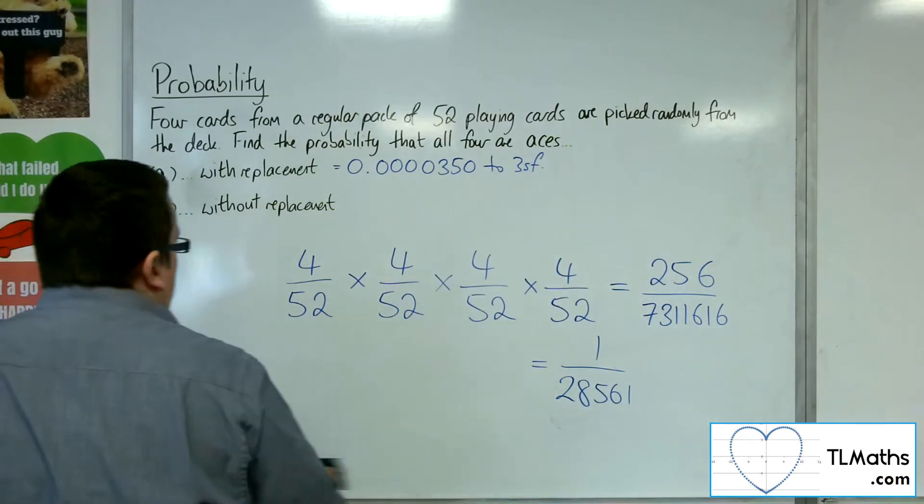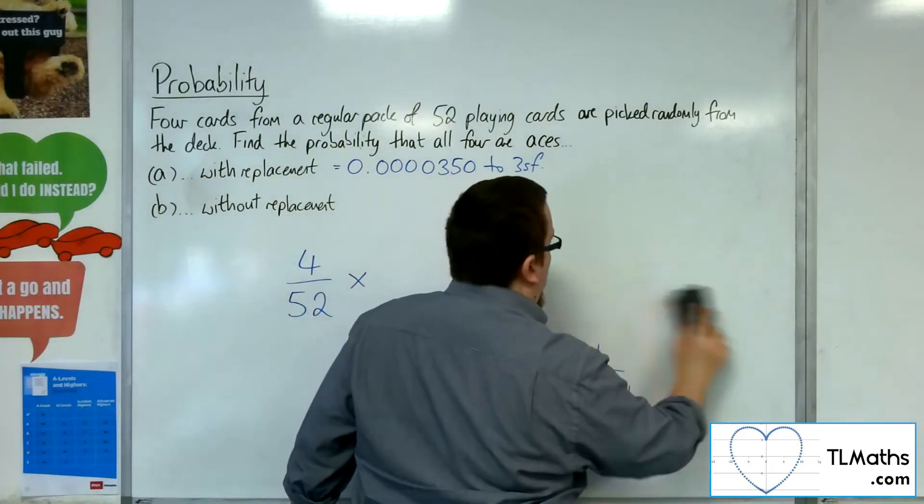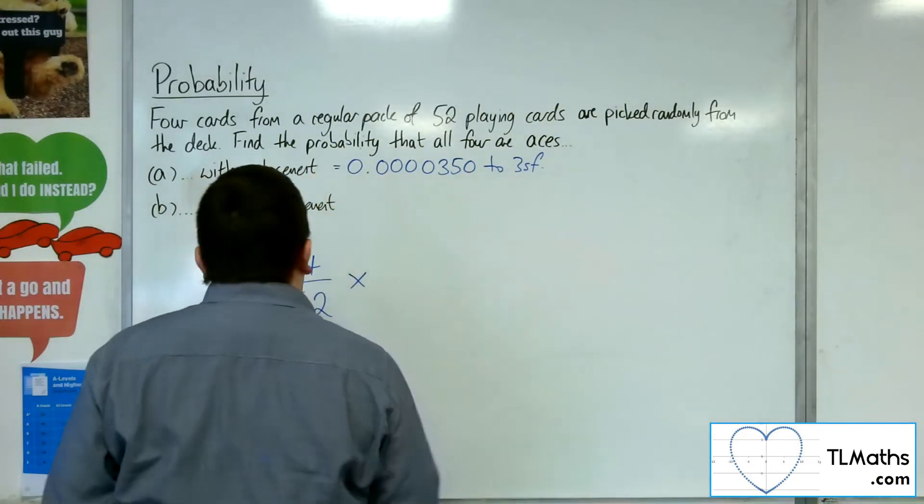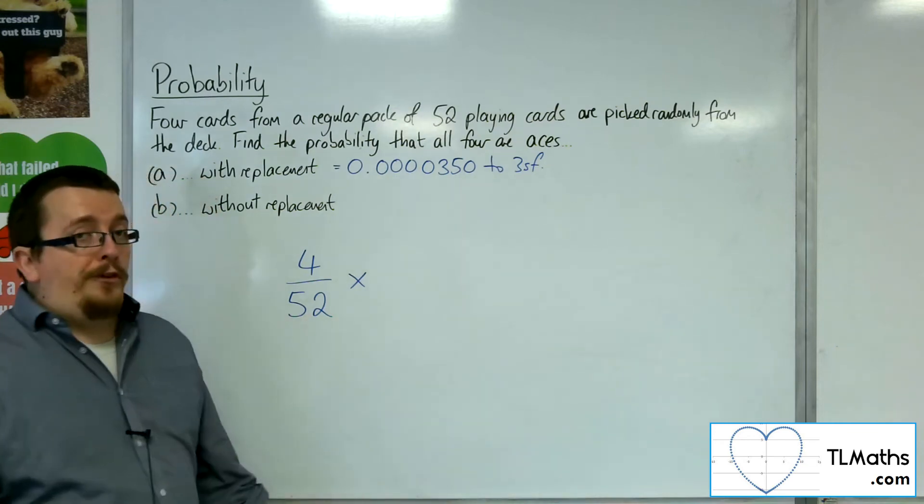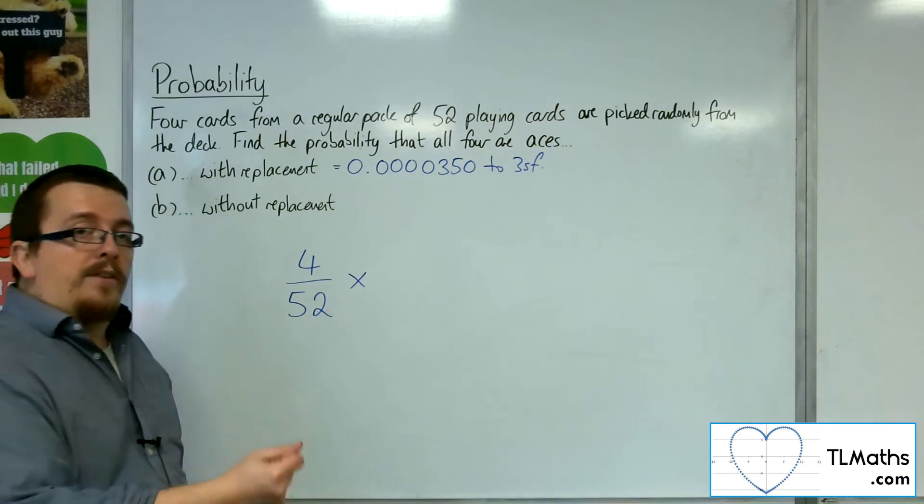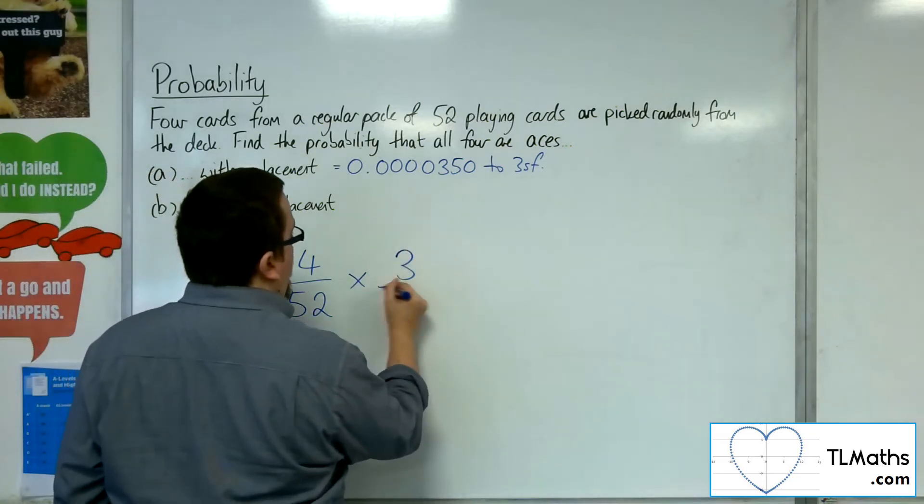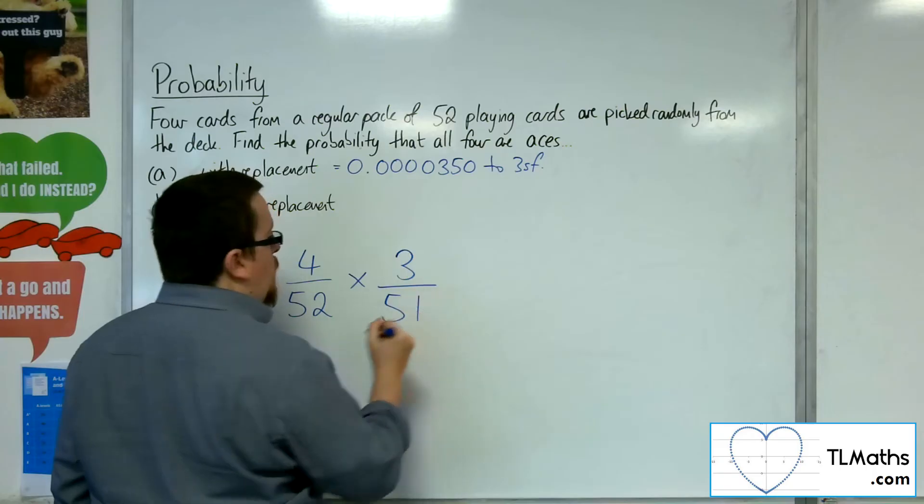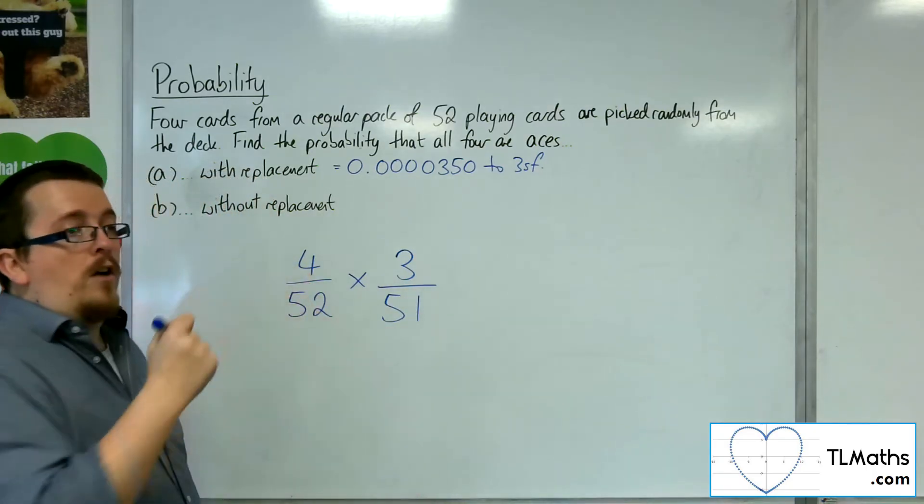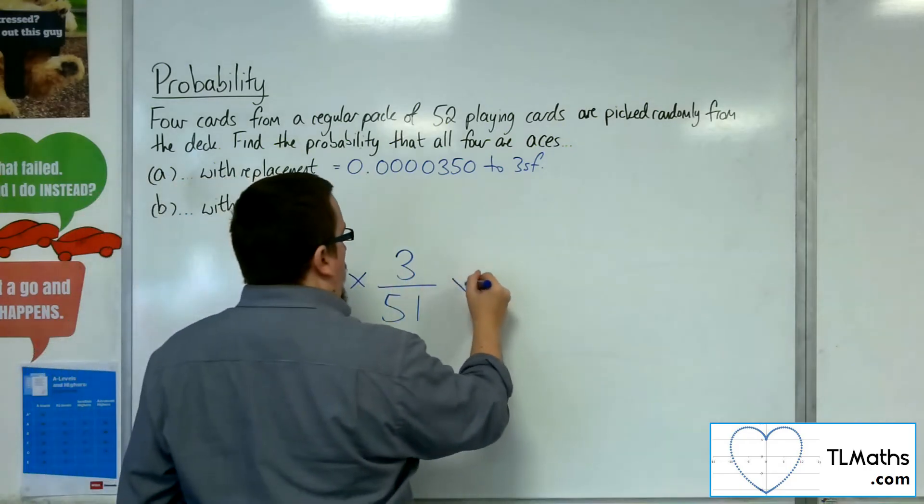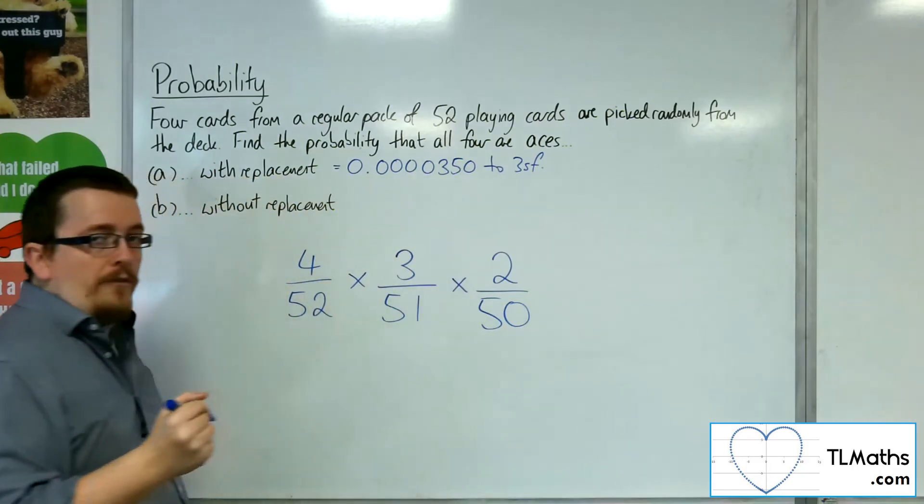So if I now don't replace the card, and I remove it each time, the first pick will still be 4 out of 52. But now that I've removed that ace, there will now be three aces left out of 51 cards. I pick that ace out, I remove it. So I've now got 2 out of 50 cards left.